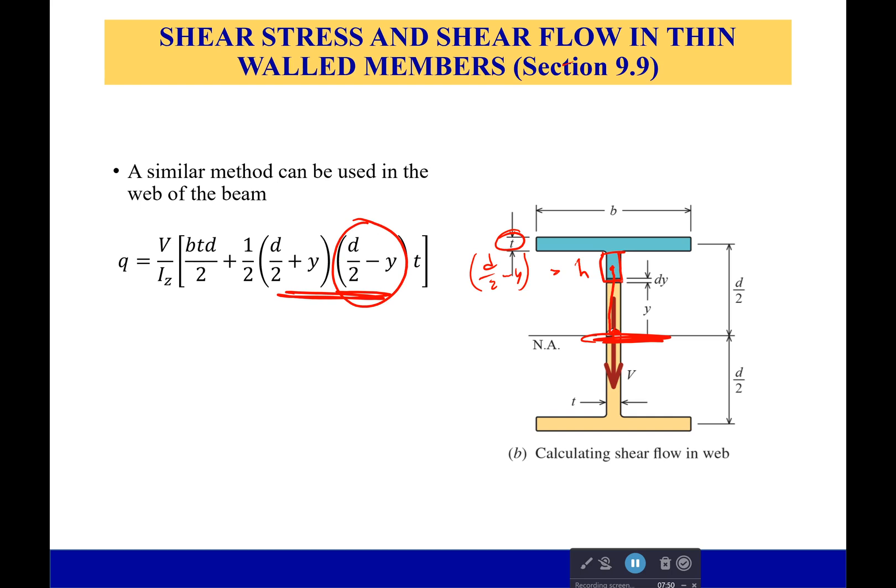And then what is the area? Well, the area is going to be that height right here, which we just calculated—which is d over 2 minus y—and we're going to multiply that by the thickness. And remember, q is equal to the area times the distance from the actual centroid to its centroid. So its centroid is going to be halfway between this point, which is y, and this point, which is d over 2. So we have our q from our first section and now q from the second section.